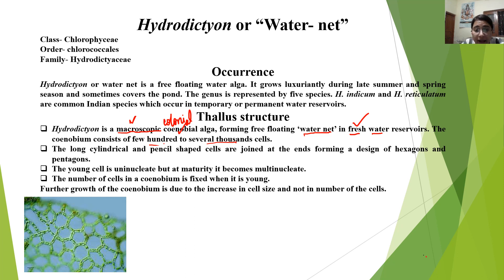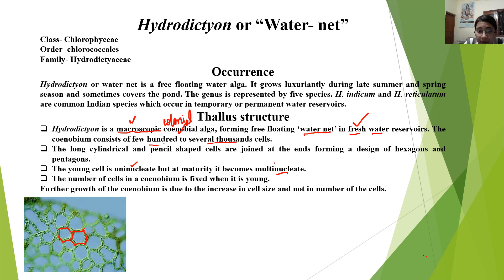Long cylindrical and pencil-shaped cells are joined at the ends, forming a design of hexagons and pentagons. The young cells are uninucleated, but at maturity they become multinucleated. The number of cells in a coenobium is fixed when it is young. Further growth of the coenobium is due to increase in size, but not in number.